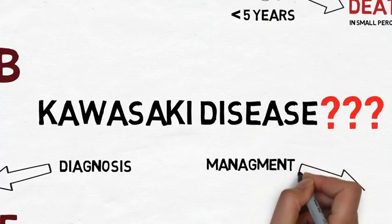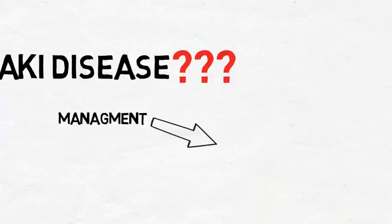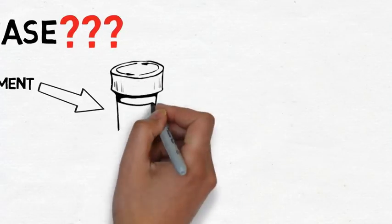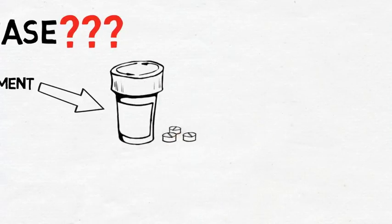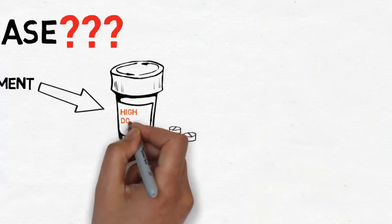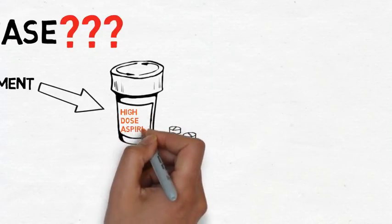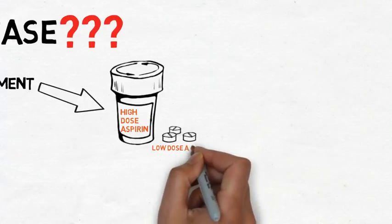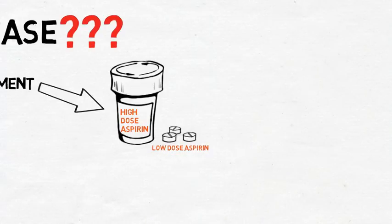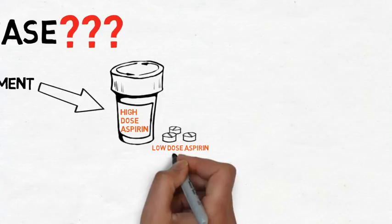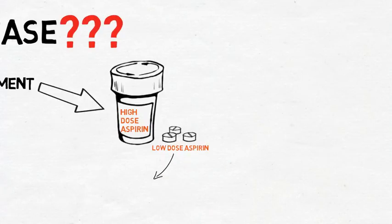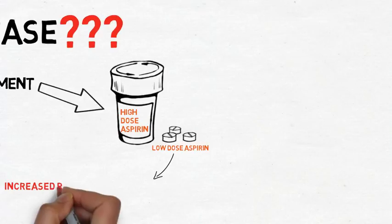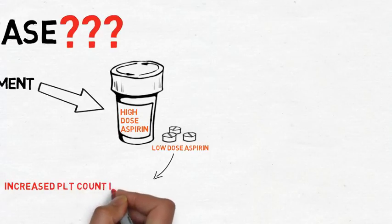Now how do we treat Kawasaki? We mainly use high-dose aspirin as an anti-inflammatory drug. After that, we use low-dose aspirin. This is mainly because in the sub-acute phase of the disease, the platelet count increases.